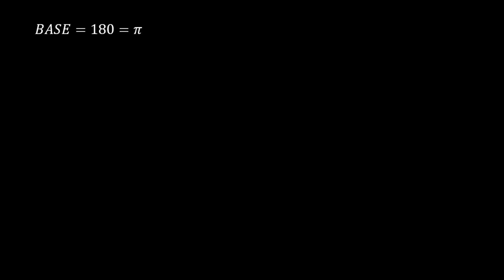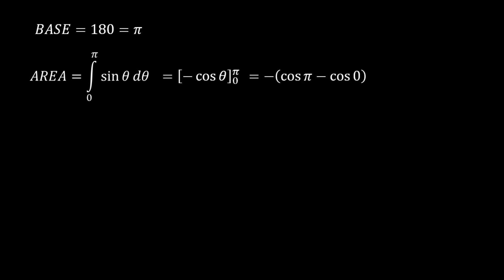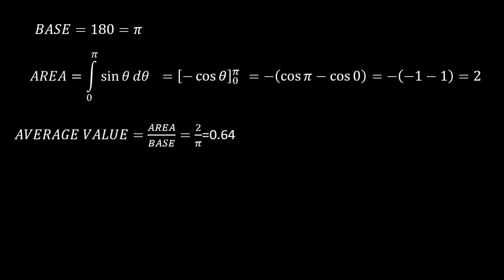The base is 180 degrees, that means pi, considering only one half cycle because it is a symmetric waveform. The area under the curve is the integral from 0 to pi of sine theta d theta. The integral of sine theta is minus cosine theta, evaluated from 0 to pi. That gives minus of cosine pi minus cosine 0, which is minus of minus 1 minus 1, giving 2. Average value equals area divided by base: 2 divided by pi, which is 0.64.